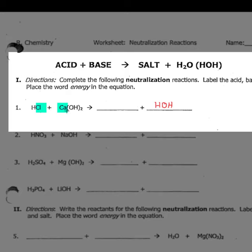And our salt is going to be whatever didn't come together to make the water. So in this case, it would be our calcium and our chlorine. So our salt in this case will be CaCl2. And that's because calcium has a plus two charge. Chlorine has a minus one charge. So those are our products.